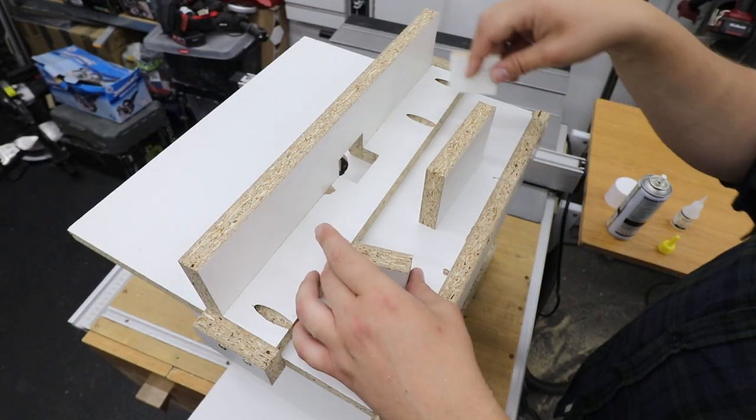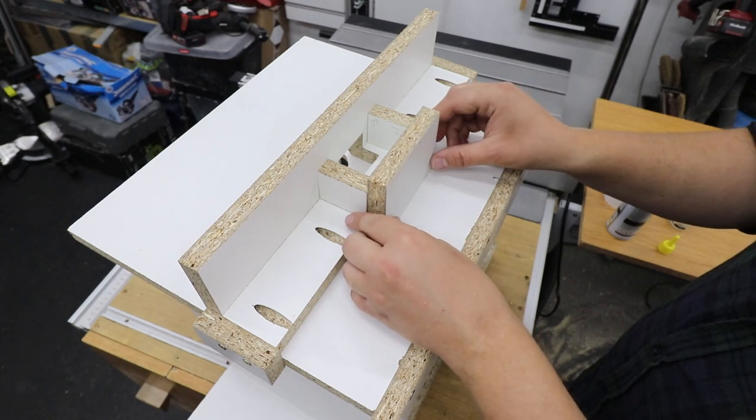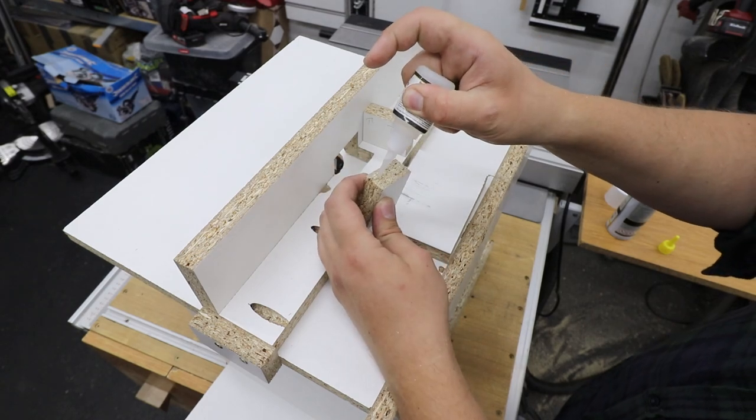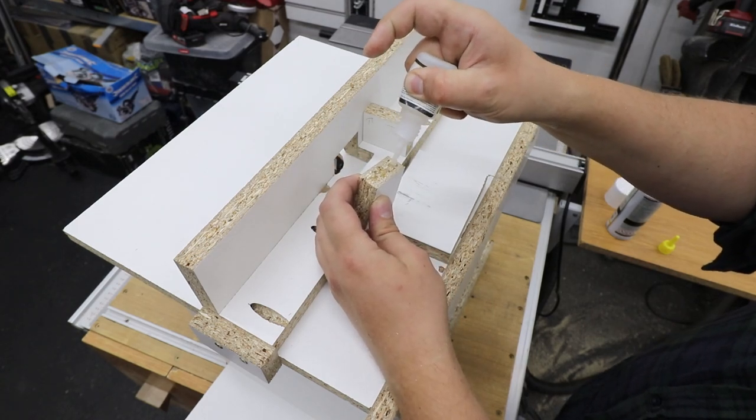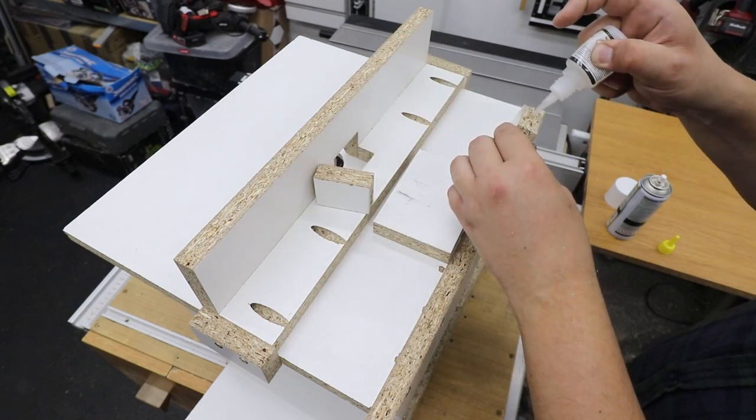Let's have a look at the dust board. We're going to box it out. I'm just going to use some CA glue to start with and after that I'll reinforce everything with some screws.